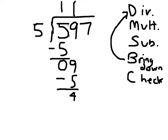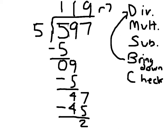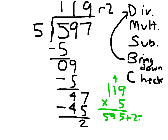Did you get to this step? Did you remember to bring down the 7 all the way next to the 4? You had 47 minus 45 equaling 2, and 2 is our remainder. Did you check your problem? That's your column division, or long division.